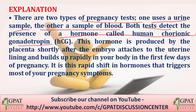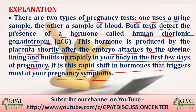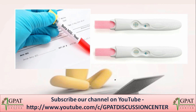HCG is produced by the placenta shortly after the embryo attaches to the uterine lining and builds up rapidly in the body in the first few days of pregnancy. This rapid shift in hormones triggers most pregnancy symptoms. HCG is detected via urine sample or blood sample. So the correct answer is B, HCG.